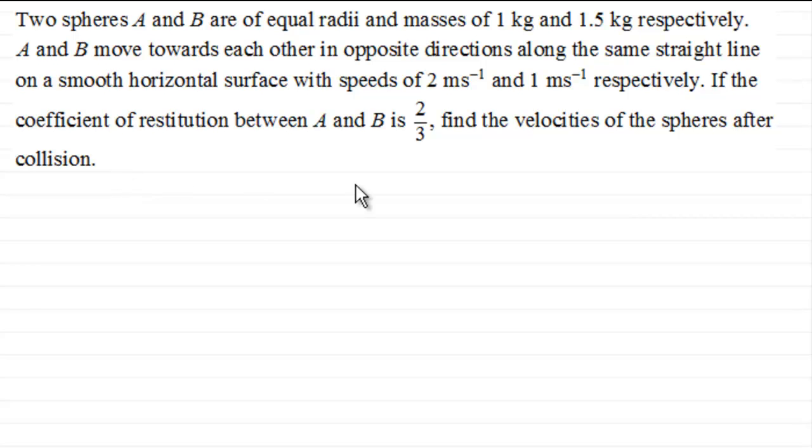So to do something like this, we'd draw our particles and label them A and B. We've got the masses of A and B. We're told that A is 1 kilogram and B is 1.5 kilograms. And going to look at the motion before impact, and then below we'll look at the motion after impact.